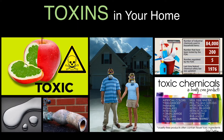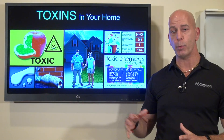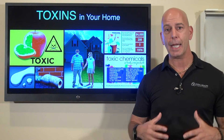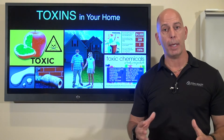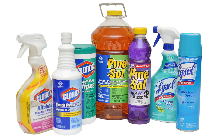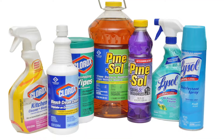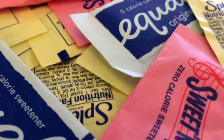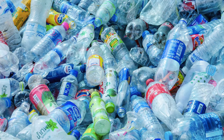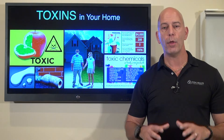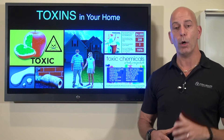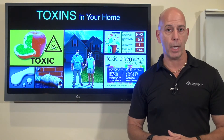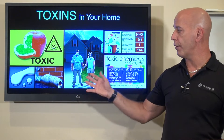Now let's talk about toxins in your home. We have over 84,000 chemicals that we're exposed to on a daily basis — through our cleaning supplies, food additives, artificial sweeteners, preservatives, dyes, colorings, and plastics. All these things really mess up our hormones and also cause inflammation in the body. So you want to get away from this.